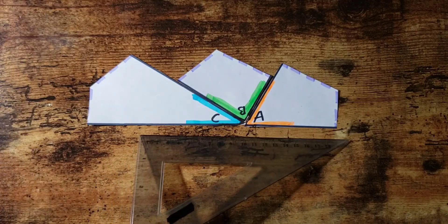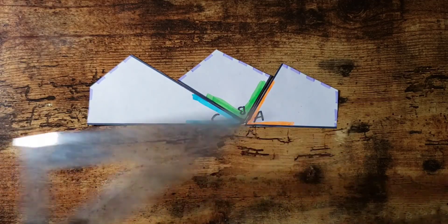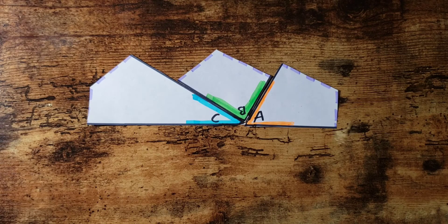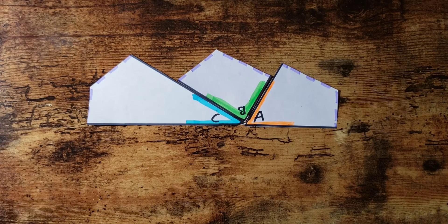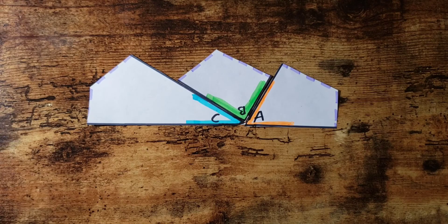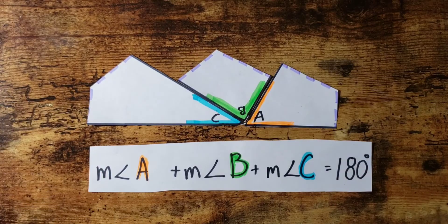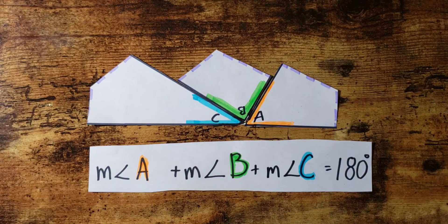As we know, straight lines measure 180 degrees. That means that angle C, angle B, and angle A should add up to 180 degrees. So using the angle addition postulate, if we add these three together, they form a straight line. And a straight line measures 180 degrees. Therefore, the triangle sum theorem is true.